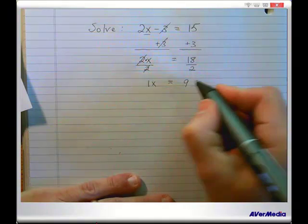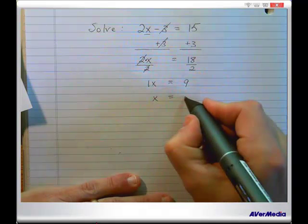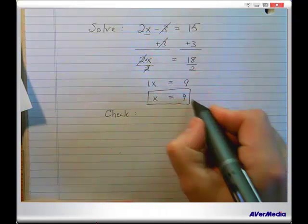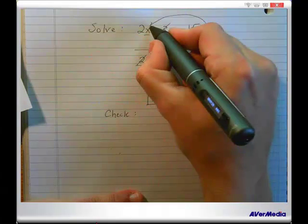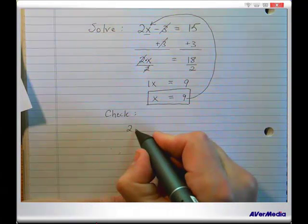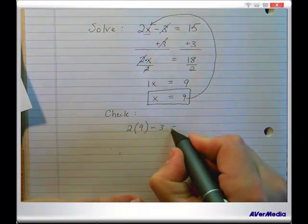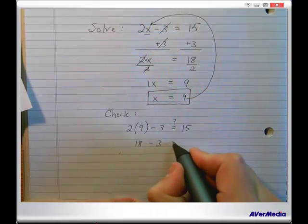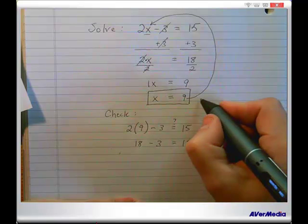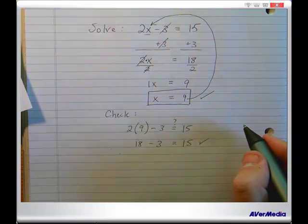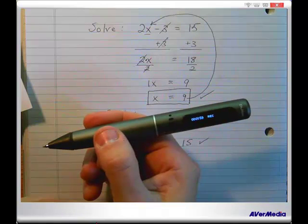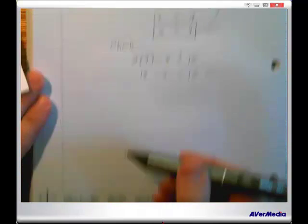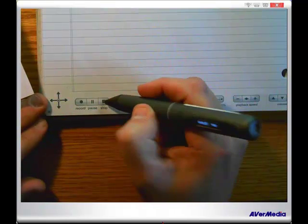You get 9 on the other side, so you want to get in the habit of writing x equals 9. Now we should check that — let's do that quick like a bunny. For the check, we take the value x equals 9 and substitute it back in: 2 times 9 minus 3. Is that equal to 15? 2 times 9 is 18, and 18 minus 3 is indeed 15. So x equals 9 is correct. Now I'm going to stop recording by clicking the stop button.